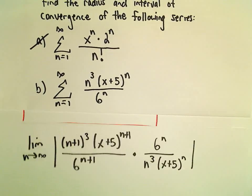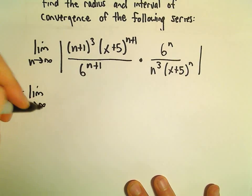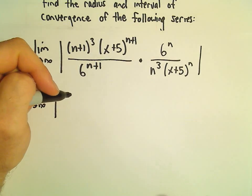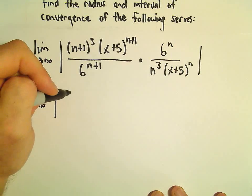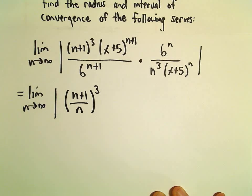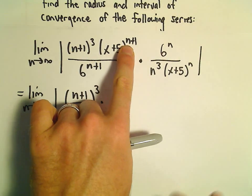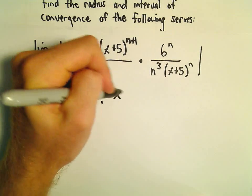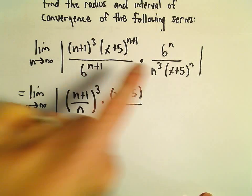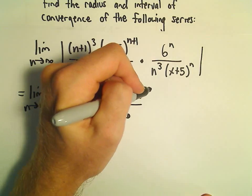Let's try to simplify this a little bit. We've got the limit as n goes to infinity of n plus 1 to the third over n to the third — not a real good way to simplify that, but we could always write it as n plus 1 over n, all of that raised to the third power. We've got x plus 5 to the n plus 1 over x plus 5 to the n, which leaves us with an x plus 5 in the numerator. And then 6 to the n over 6 to the n plus 1, which leaves us with a 6 in the denominator.